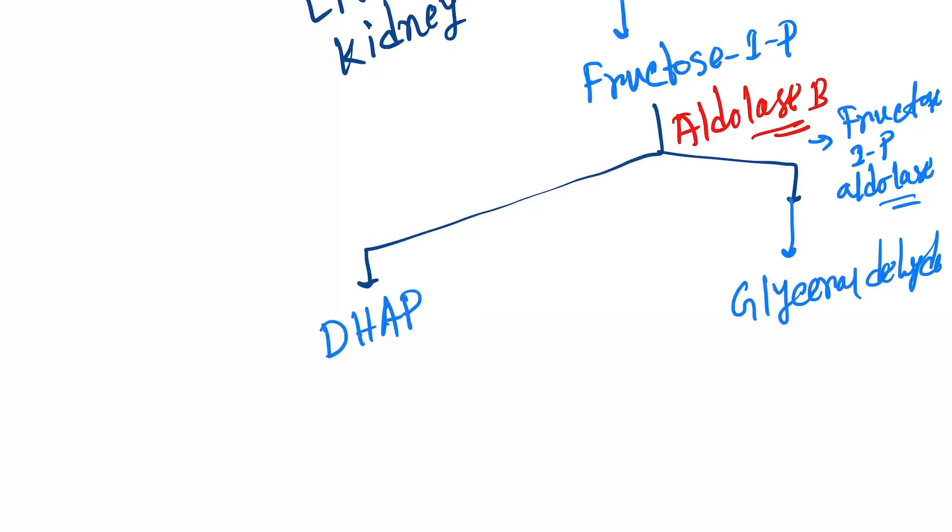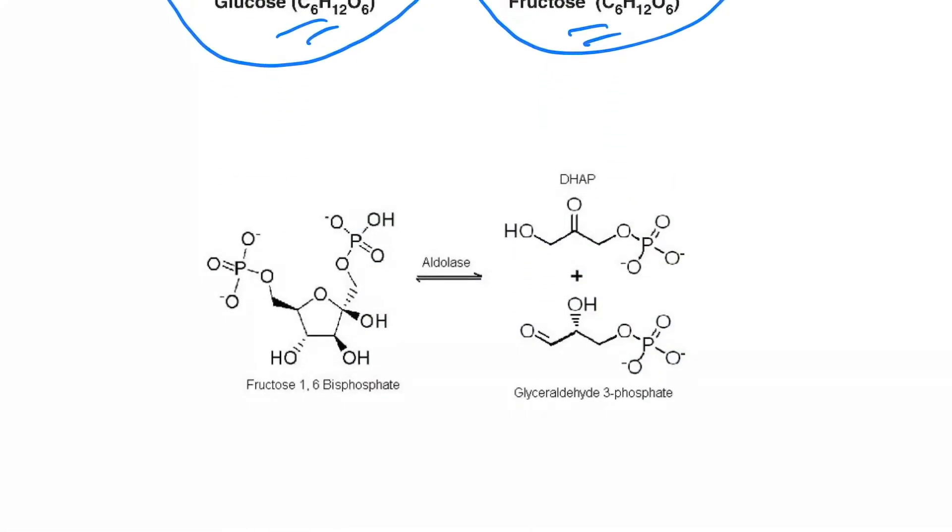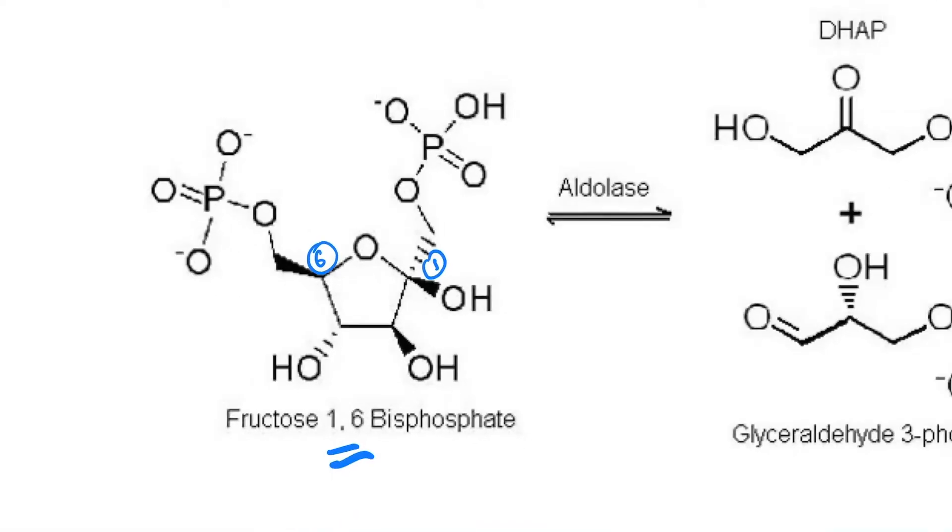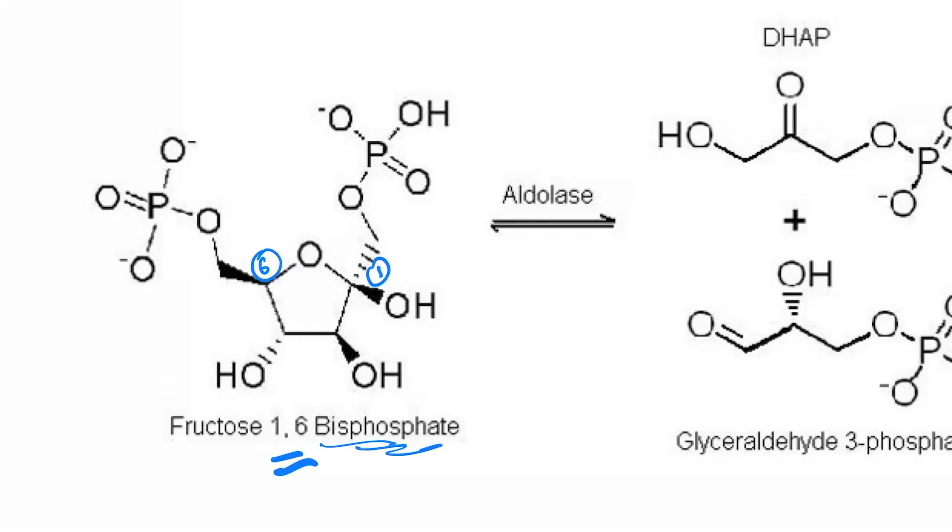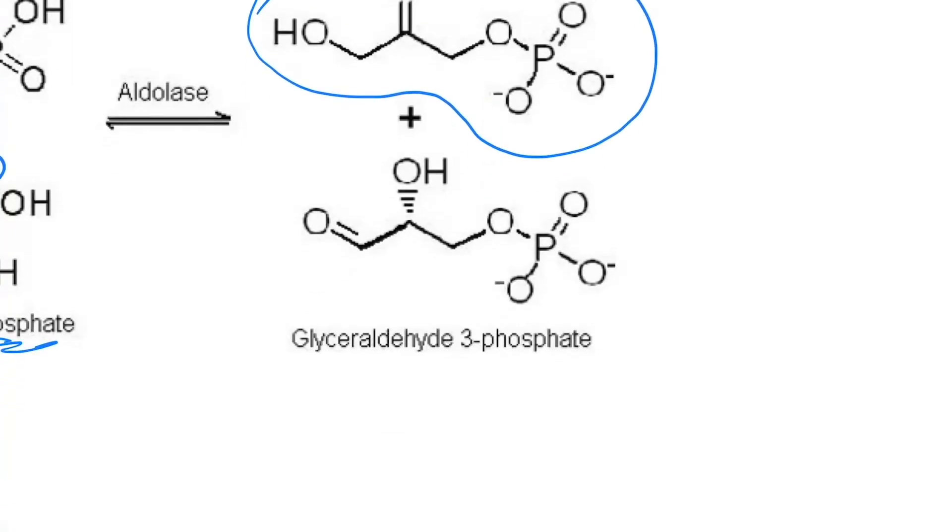Now let's see in the picture. This is fructose 1,6-bisphosphate. This is the number one carbon atom, this is the number six carbon atom - presence of two phosphate groups in number one and six. Now aldolase will act and cause formation. This compound is called DHAP.